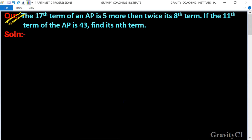Question: The 17th term of an AP is 5 more than twice its 8th term. If the 11th term of an AP is 43, find its nth term. In this question it is given that the 17th term of an AP is 5 more than twice its 8th term.